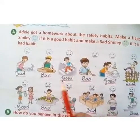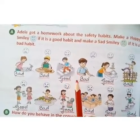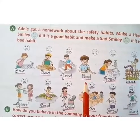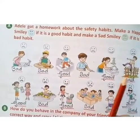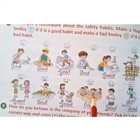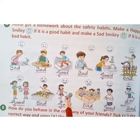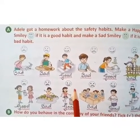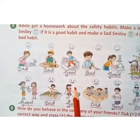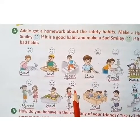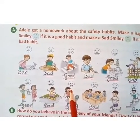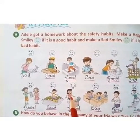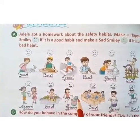Hope you have enjoyed doing all the three activities. Now open your EVS reader and you will find all these activities in the reader itself. You have to find them on page number 97 and 98. So hurry up children and start doing these activities. Here we finish this video.